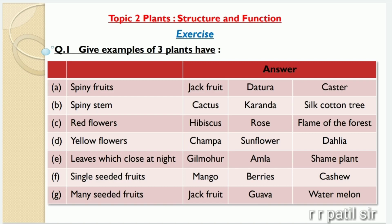Give examples of three plants that have spiny fruits, spiny stem, red flowers, yellow flowers, leaves which close at night, single seeded fruits and many seeded fruits. Now see the answers one by one. The examples of plants having spiny fruits are jackfruit, dhatura and castor.